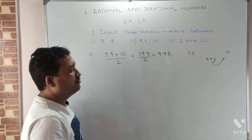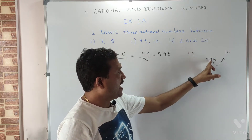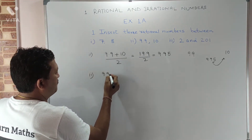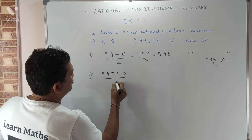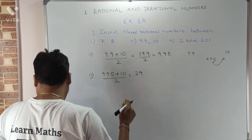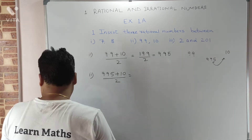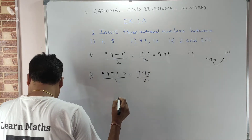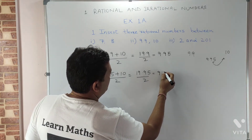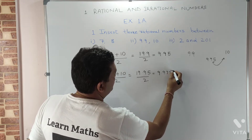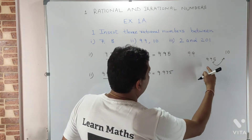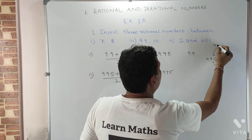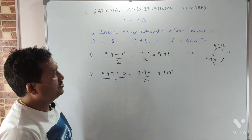Now we will find the next rational number between nine point nine and ten. We add nine point nine five with ten and divide by two. So nine point nine five plus ten upon two equals nineteen point nine five upon two. We divide to get nine point nine seven five. So nine point nine seven five is the number between nine point nine five and ten.